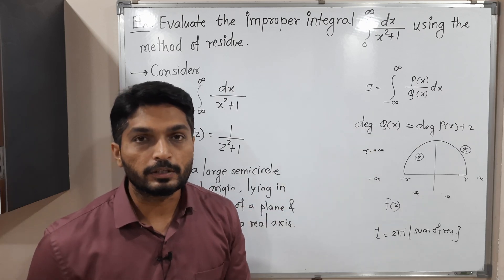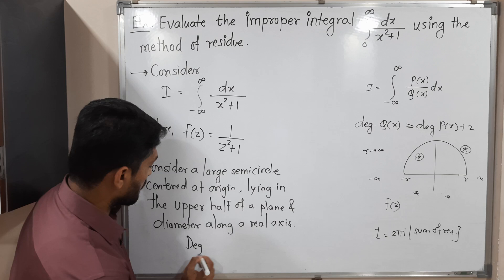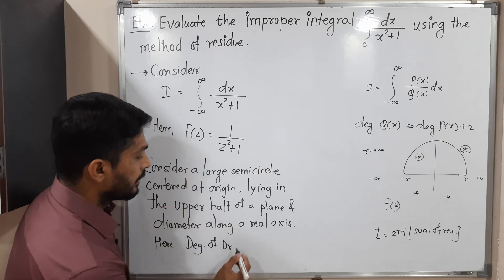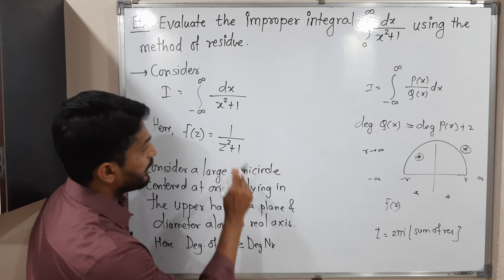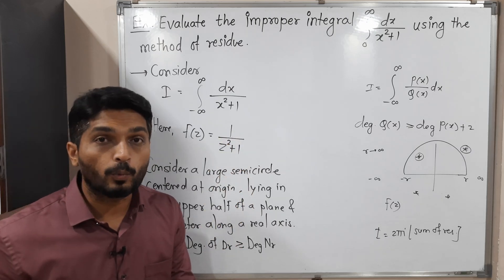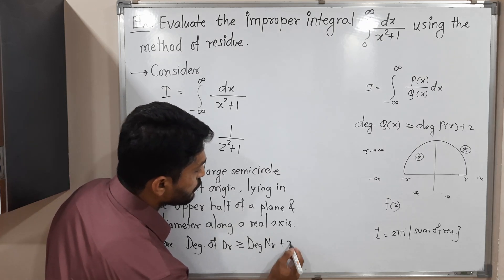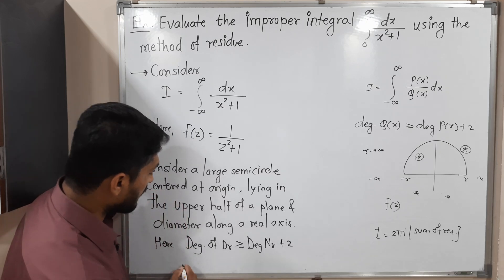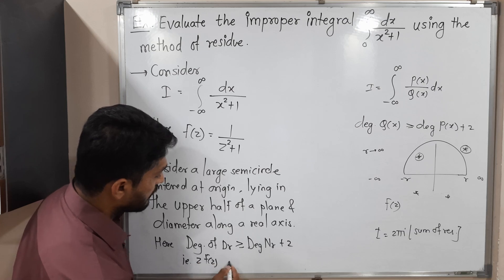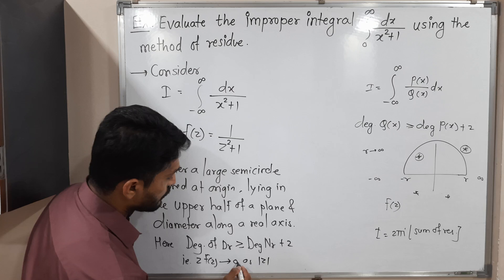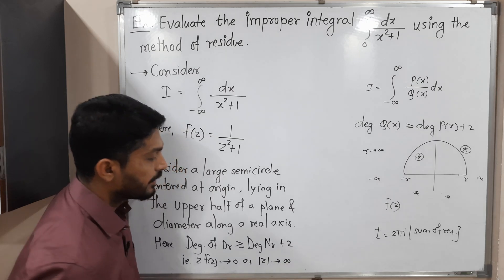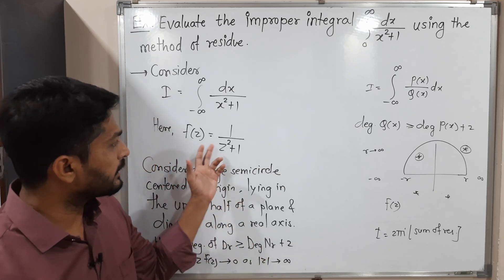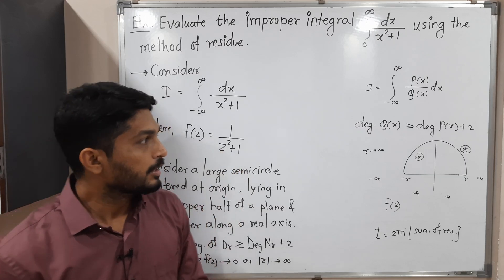The given function must satisfy the degree condition. Degree of denominator is 2, which is greater than or equal to degree of numerator (which is 0, a constant polynomial) plus 2, giving 0+2=2. So the condition is satisfied. Equivalently, z·f(z) tends to 0 as |z| tends to infinity. The degree difference is 2, so all conditions are satisfied.